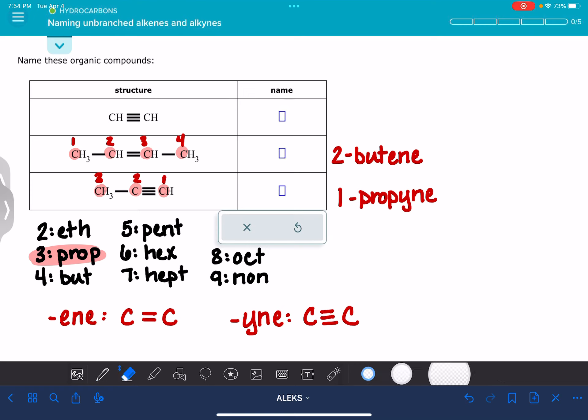Now, you may have learned that you don't need to include the one in the name, and that is true, but sometimes that's a little bit confusing for students. When in doubt, just leave the number there. ALEKS is perfectly fine with it. The last molecule that we're looking at, this is a two-carbon chain.